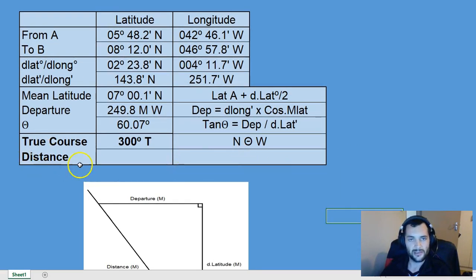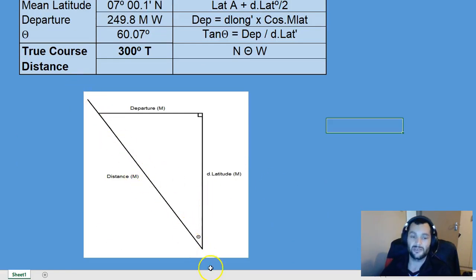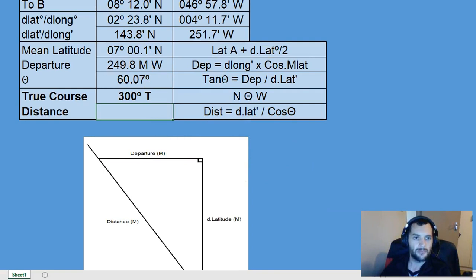The last thing we need to do is find the distance. Cosine of theta, cosine of our course angle, must be adjacent over hypotenuse. So cosine theta equals d latitude divided by distance. Then distance must be equal to d latitude divided by cosine theta. We simply plug our values in, and that gives us an actual distance covered of 288.25 miles. This calculation can still be considered fairly accurate.